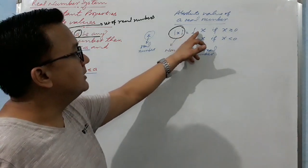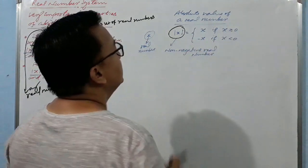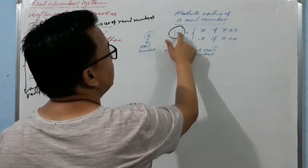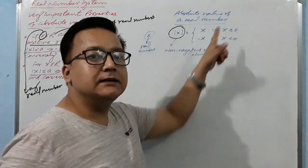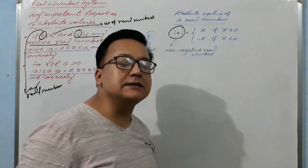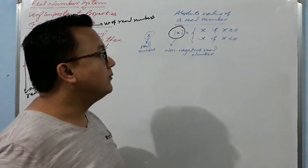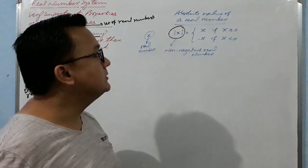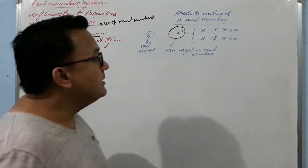Mod of X is defined as: mod of X equals X if X is greater than or equal to zero, and mod of X equals negative X if X is less than zero. This is the piecewise definition of absolute value of a real number.